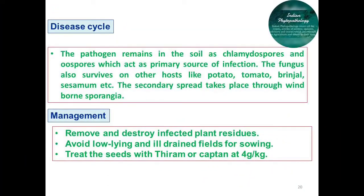This pathogen is present in soil in the form of oospores. Oospores serve as resting spores and they can survive up to the next season, serving as the primary source of infection for the disease cycle. This fungal pathogen also survives on hosts like potato, tomato, brinjal, and sesamum. These are alternate hosts on which they can survive under dormant conditions.